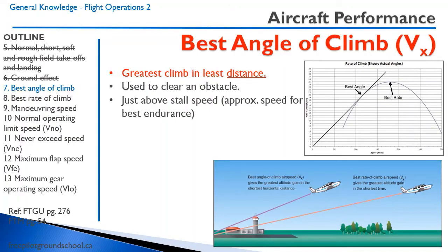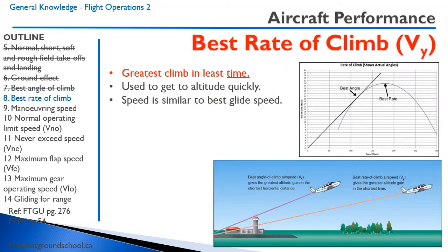The best angle of climb is the greatest climb in the least distance — obviously used for clearing an obstacle — and the speed is just above stall speed, approximately the same as the speed for best endurance. Conversely, the best rate of climb is the greatest climb in the least time. We usually climb at the best rate of climb speed when there is no obstacle, and it is very similar to the best glide speed and the speed at the best lift-drag ratio.